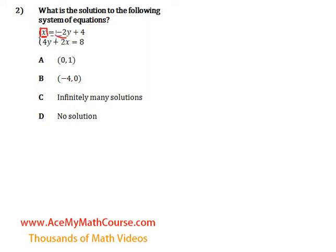So what I can do is I can just take the negative 2y plus 4 which is equivalent to x and just plug it in for x and try to solve for y.